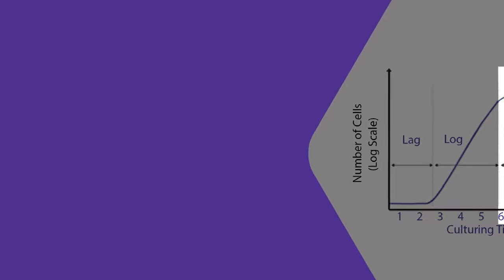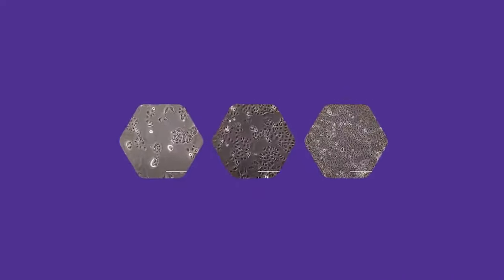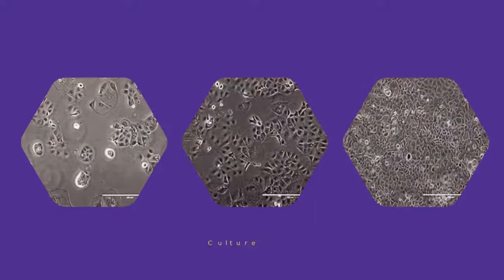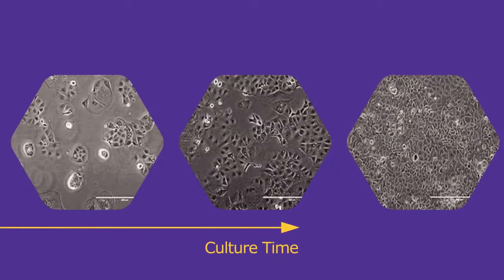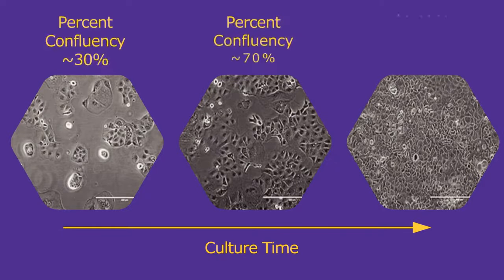Now let's cover the concept of confluency which simply refers to percentage of surface covered by adherent cells. In general, cells are passaged when they reach around 80% confluency.